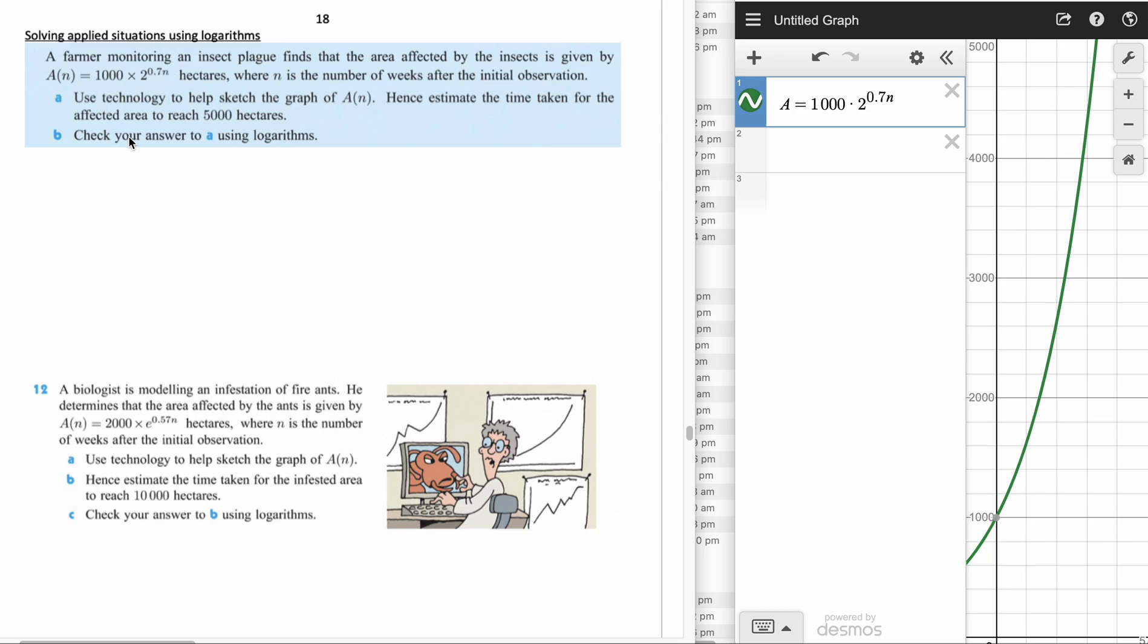The first question says use technology to help sketch the graph of the function a(n), hence estimate the time taken for the affected area to reach 5,000 hectares, then check your answer using logarithms. We're going to use the graph mode here.